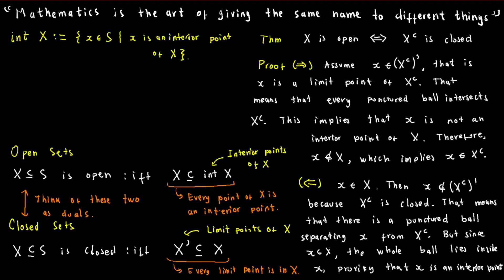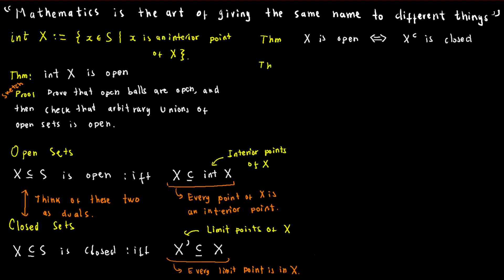Let's denote the set of interior points of X by int X. Think of int X as the cozy, comfy core of X. It's the place where every point has enough room to move around and feel at home. Not only that, but int X is also an open set, meaning it's surrounded by a welcoming open embrace that extends infinitely in all directions. And here is a fun fact. Int X is actually the largest open set contained in X. So if you want to make your set as spacious and airy as possible, int X is your go-to destination.